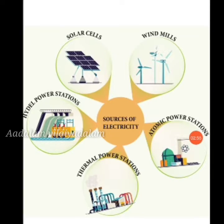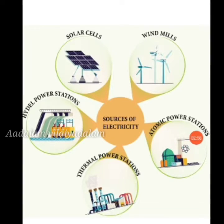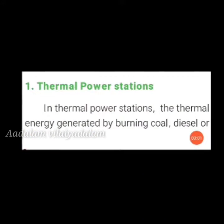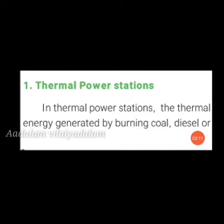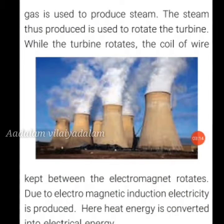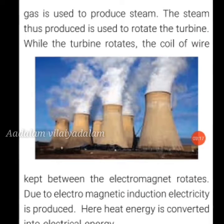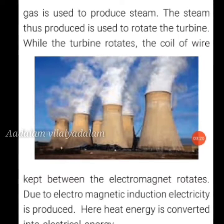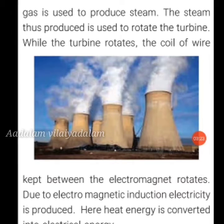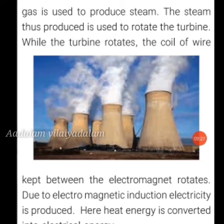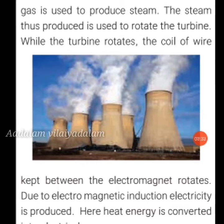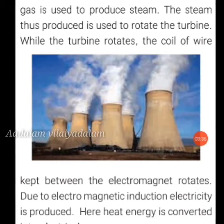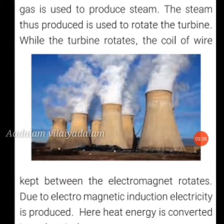Let us discuss the working of power stations. In a thermal power station, the thermal energy generated by burning coal, diesel, or gas is used to produce steam. The steam is used to rotate a turbine. As the turbine rotates, a coil of wire kept between an electromagnet rotates, and due to electromagnetic induction, electricity is produced. Here, heat energy is converted into electrical energy.